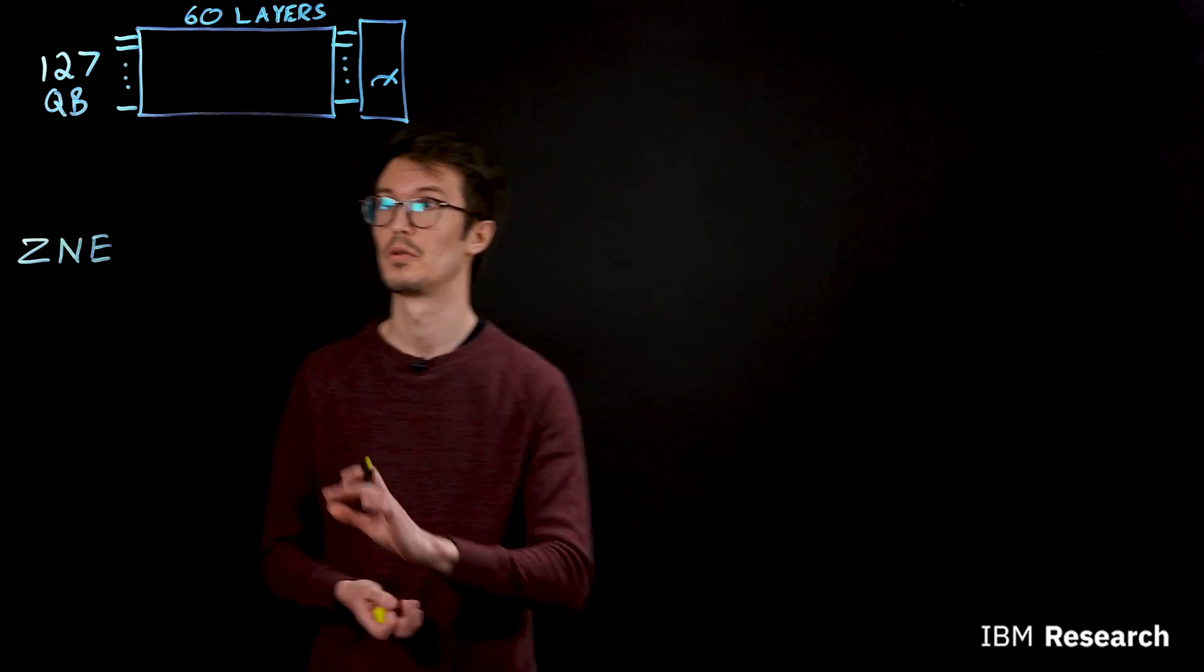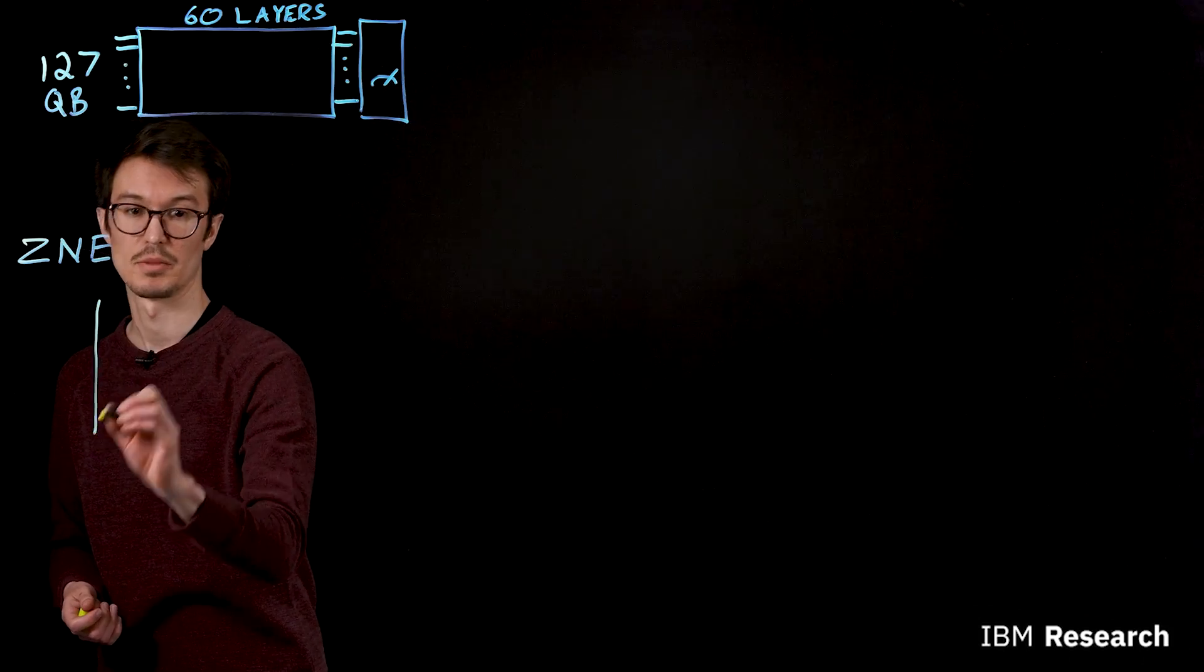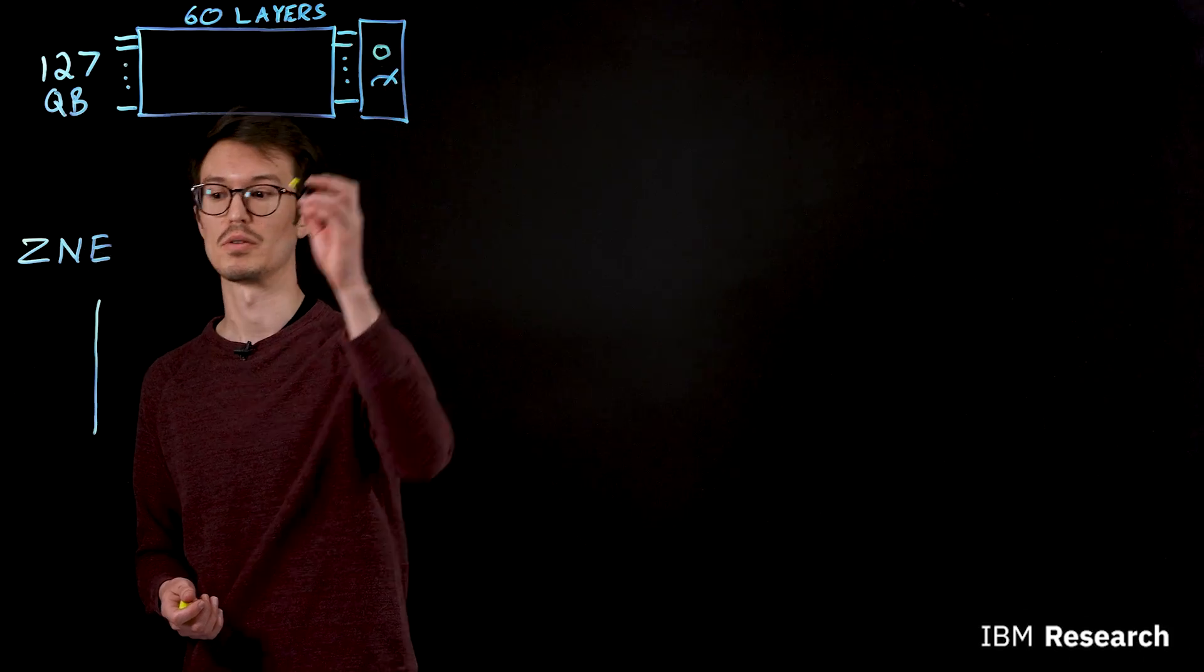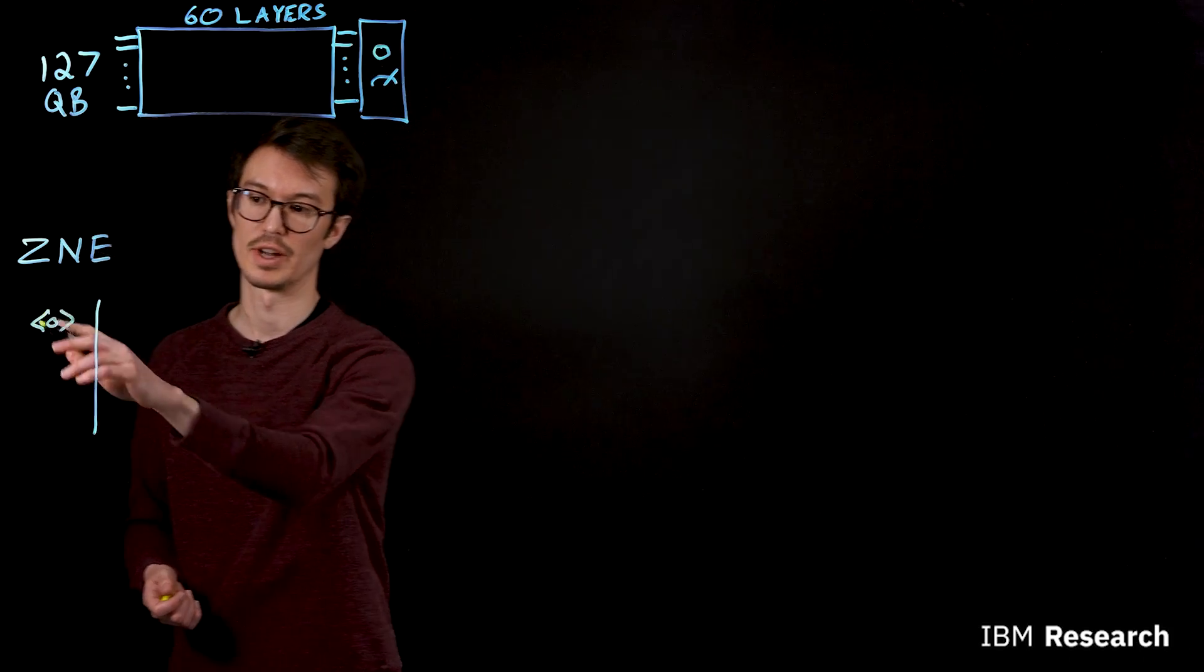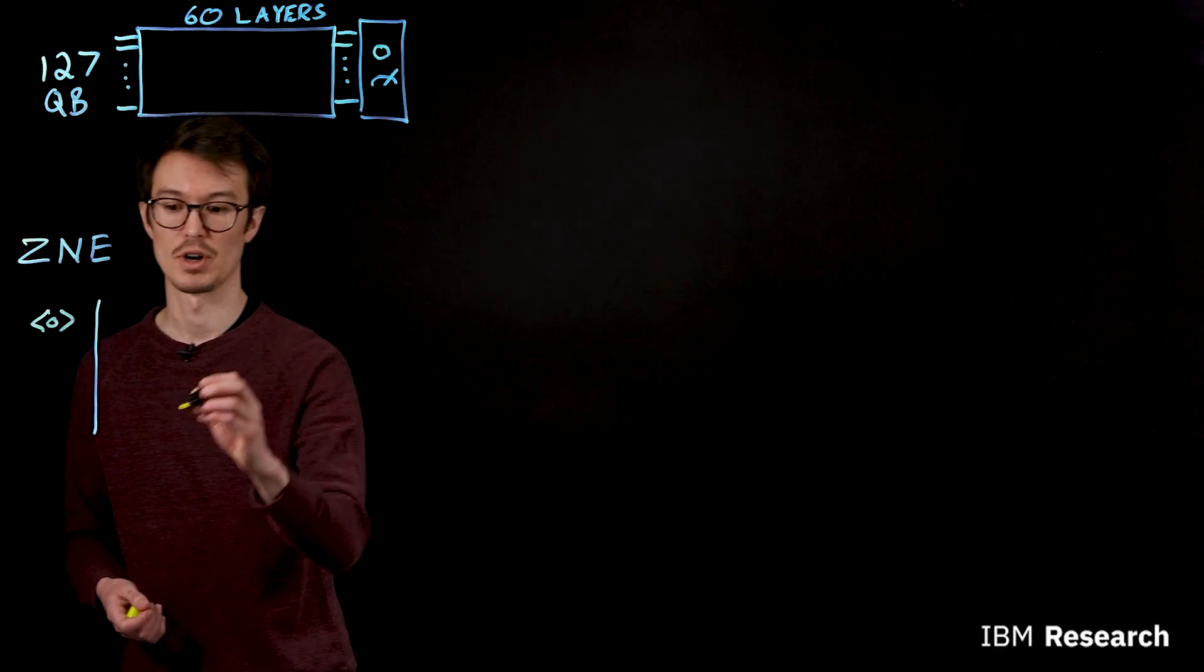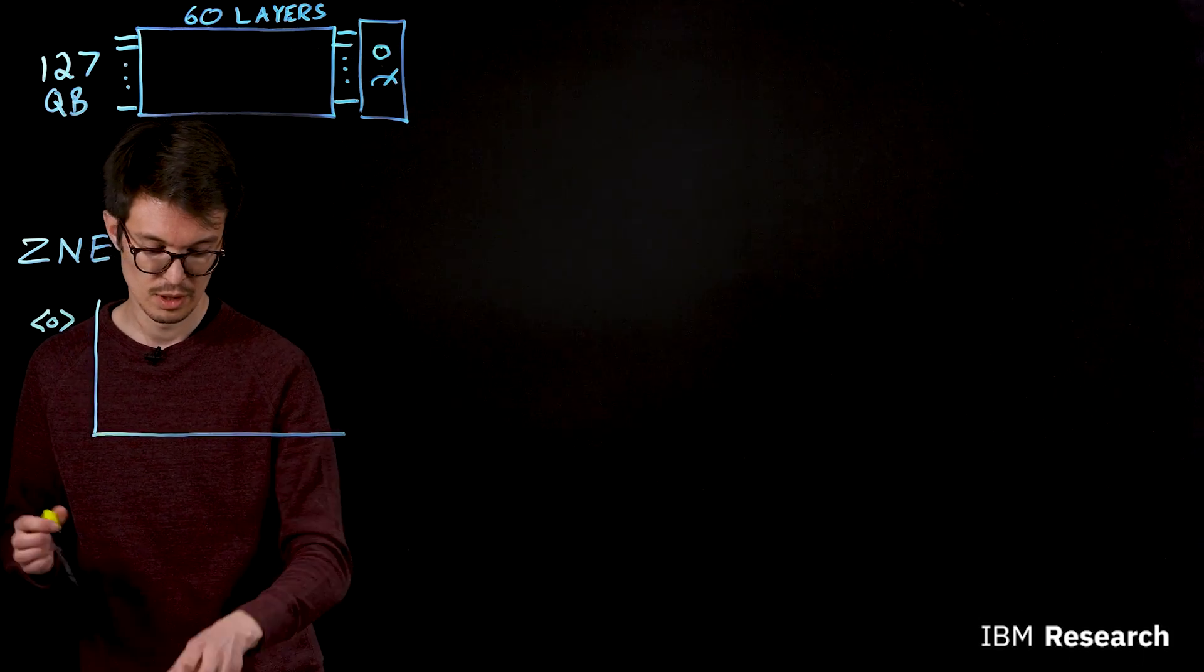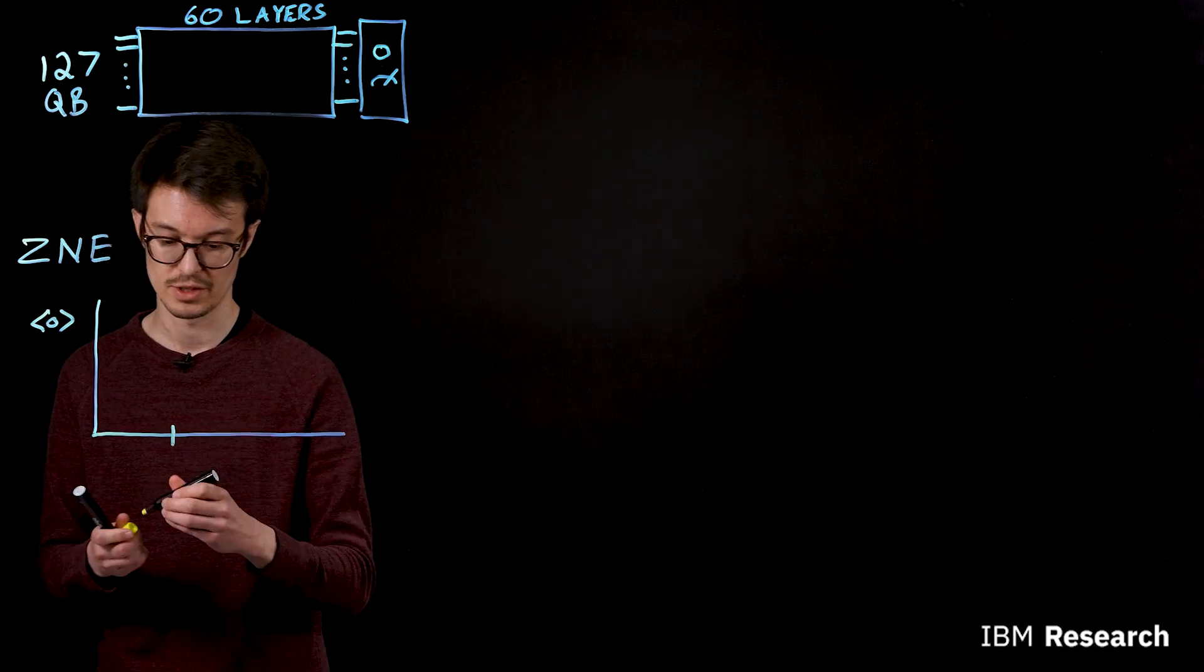So how does ZNE work? First we'll run our circuit and get some estimate of our observable. Say we want to learn some observable property O, and we want to look at the average or expectation value of that property. We run our experiment and we get some result.